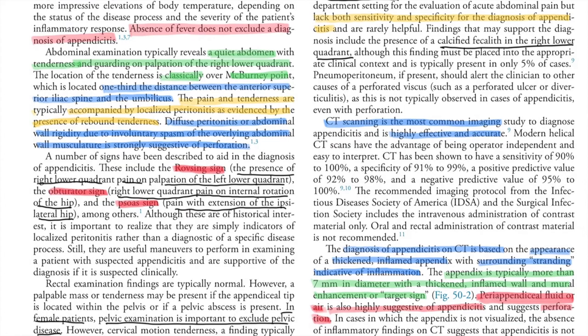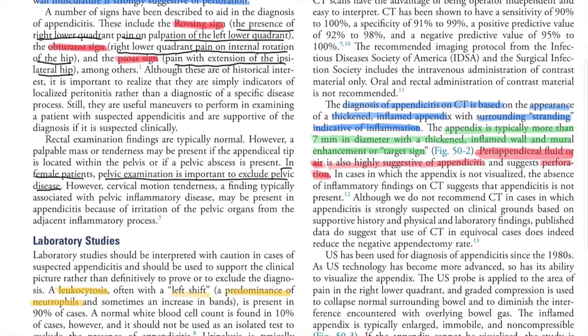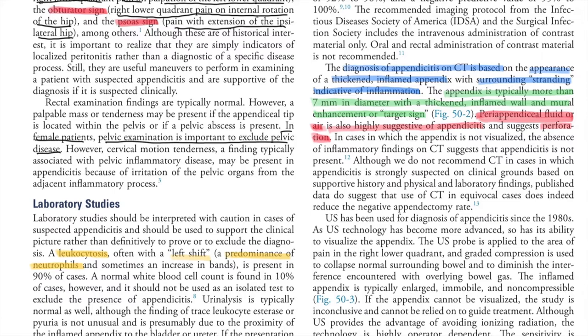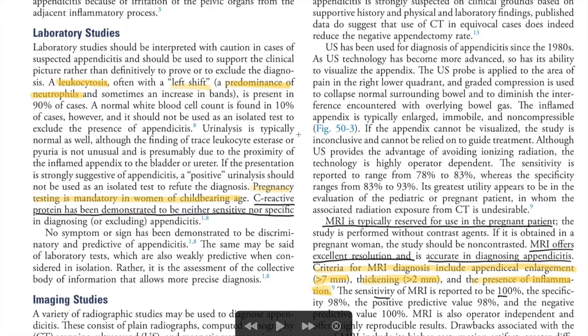For imaging, plain radiographs lack sensitivity and specificity but may show a calcified fecalith in the right lower quadrant. CT scan is the most common and accurate imaging modality. On CT, appendicitis is diagnosed based on thickening of the inflamed appendix with surrounding fat stranding. The appendix is typically greater than 7 mm in diameter with a thickened inflamed wall, mural enhancement or target sign, and peri-appendicular fluid suggesting perforation.